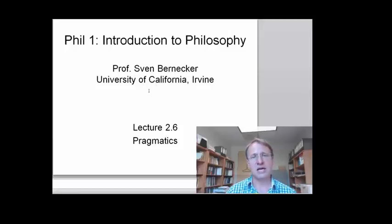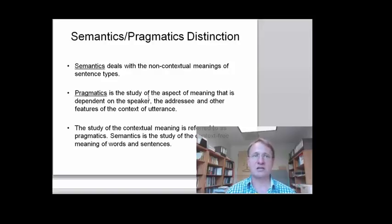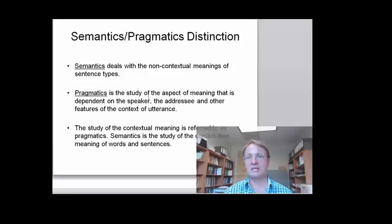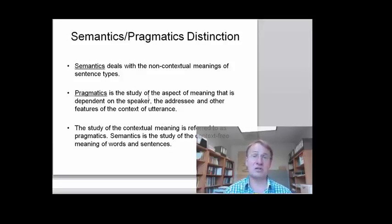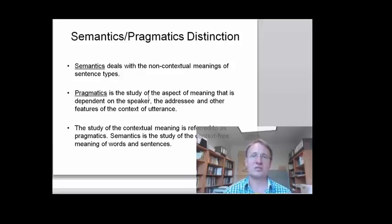What we're going to look at today is a theory of meaning that is very different — one proposed by a philosopher called Paul Grice. To get into Grice's theory of meaning, let's remind ourselves of the distinction between semantics and pragmatics. Semantics deals with the non-contextual meanings of sentence types. Frege obviously provides a semantics because he insists on the objectivity of senses; he's interested in context-free, non-contextual meaning.